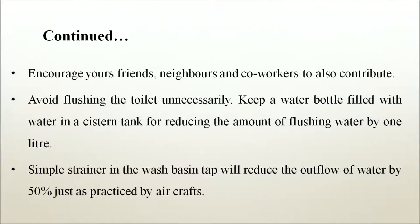Avoid flushing the toilet unnecessarily. Keep a water bottle filled with water in the cistern tank to reduce the amount of flushing water by 1 litre. A simple strainer in the washing machine tap will reduce the outflow of water by 50%. We will discuss a few other daily routine activities to reduce excess water use in the next few slides.